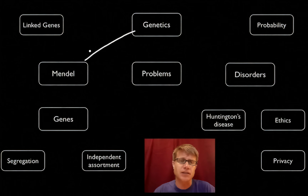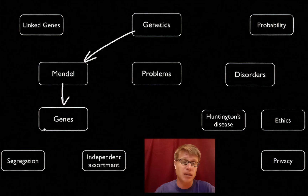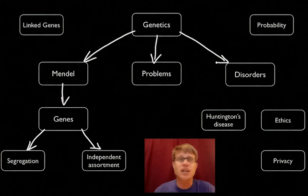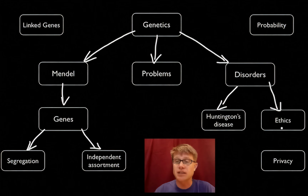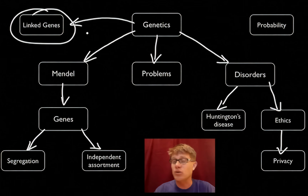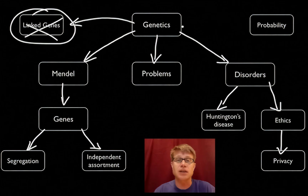In this video I'll talk about Mendelian or simple genetics. He identified the gene and came up with two laws: the law of segregation and independent assortment. We'll also have some practice problems that you can try and I'll show you how to work those out. And we'll finish with genetic disorders — the example I'll talk about is Huntington's disease. With genetic testing it opens up the whole idea of ethics and privacy. What I won't be talking about are linked genes — in other words, if genes are on the same chromosome, on a sex chromosome, or caused by multiple genes it gets really complex. I'll talk about those in the next podcast on advanced genetics.